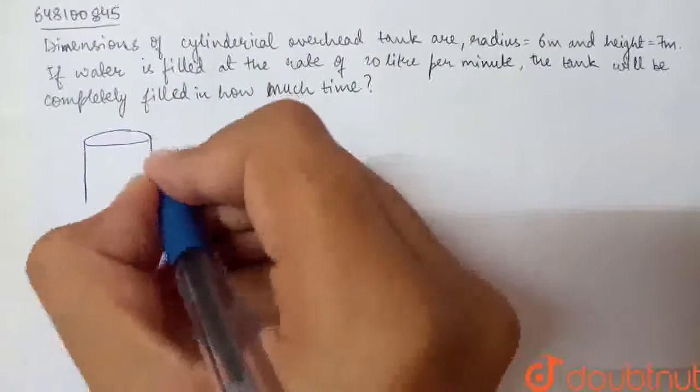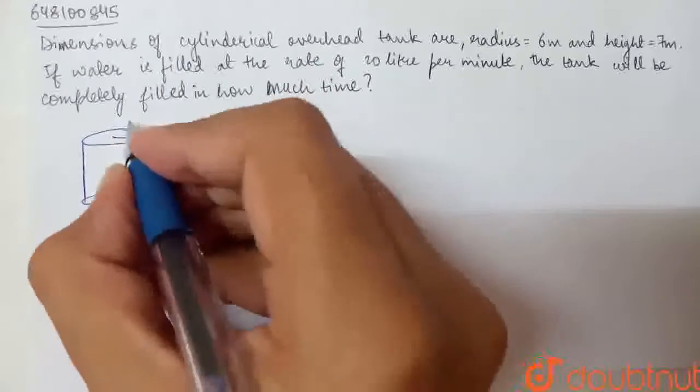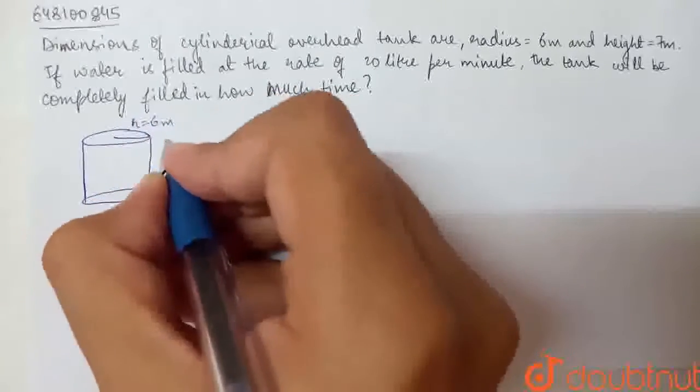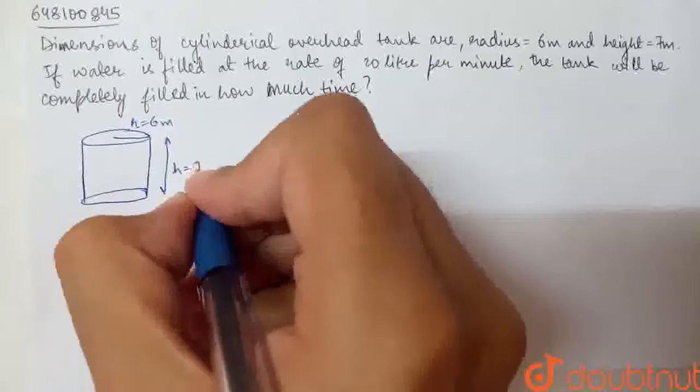Let's suppose this is our cylindrical tank. We have the radius given as 6 meters, height given as 7 meters.